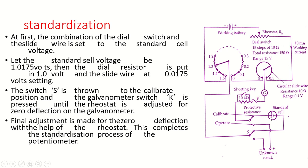The value 1.0175 volt is split as 1 volt and 0.0175 volt. The 1 volt is set on the large dial switch — since each step is 0.1 volt, you set the dial to the position corresponding to 1 volt. For the small circular slide wire, each division is 0.0005 volt, so you set it to correspond to 0.0175 volt. Set these two values on the respective dials.